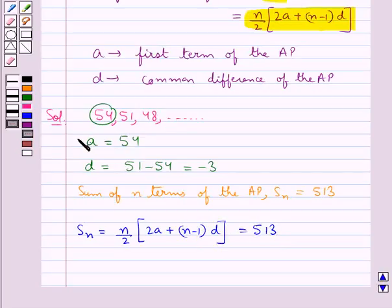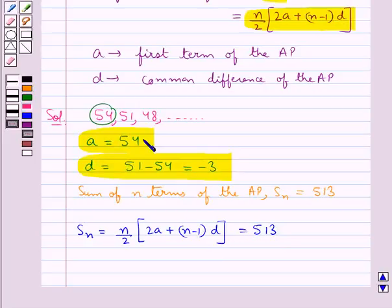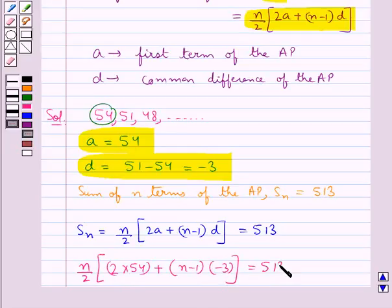Now we put the values for a and d, that is a is 54 and d is -3. So we get n/2 times [2(54) + (n-1)(-3)] equals 513.